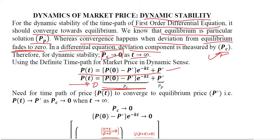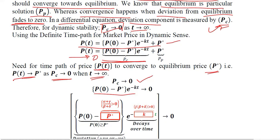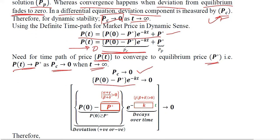We need the time path pt to converge to the equilibrium price, and that will be possible when the complementary function approaches zero as time moves forward indefinitely. As t approaches infinity, pc approaches zero. To achieve this, we substitute the value of pc and do an in-depth analysis of the terms involved. The first part is p-naught minus p-star.